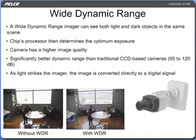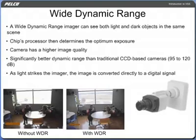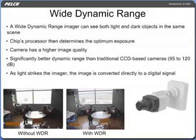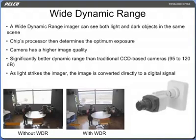The wide dynamic range imager can see both light and dark objects in the same scene. The chip's processor determines the optimum exposure pixel by pixel, essentially acting like more than 350,000 individual cameras. The result is a higher image quality and a significantly better dynamic range than traditional CCD-based cameras, 95 to 120 decibels. The wide dynamic range imager is unique in that as light strikes the imager, the image is converted directly to a digital signal. The technology digitizes light at the point of capture in real time, and each pixel determines its own exposure time individually, instead of each operating at the exposure time demanded by the average brightness of the entire scene — a situation that can result in bright areas being blown out and dark areas being underexposed.